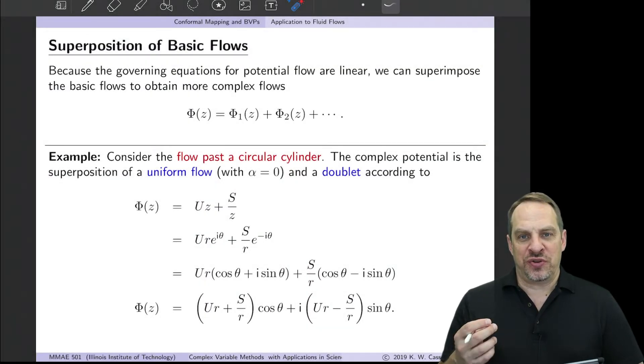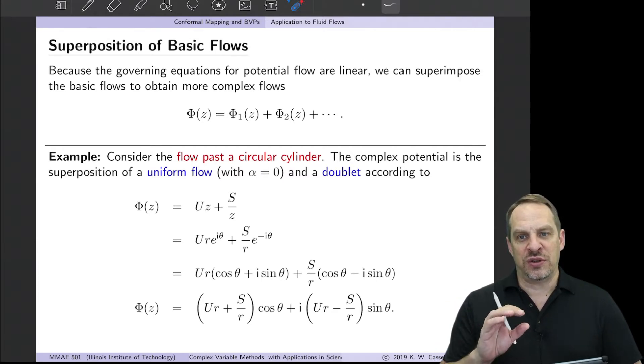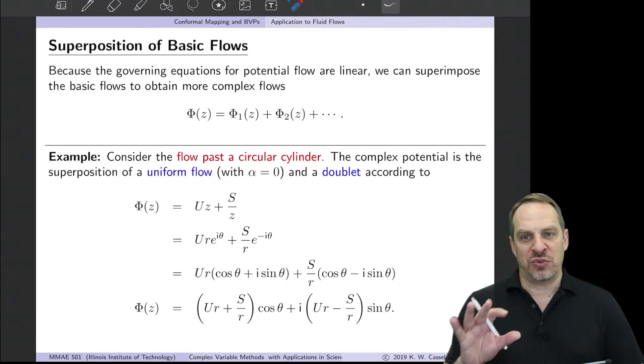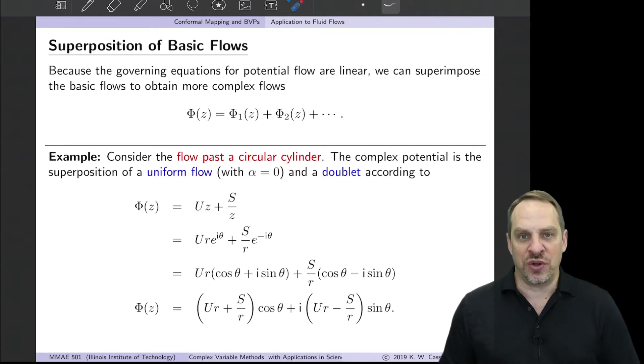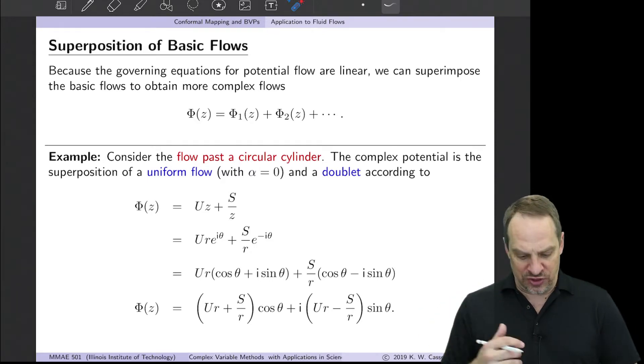In the last video, we considered some elementary flows and looked at their properties, their complex potential functions, velocity components. We said that we can combine those in useful ways to get more interesting flows. That's exactly what we're going to do here: superimpose some of these basic flows to get useful flows, like flow around a circular cylinder, which we'll look at in this video.